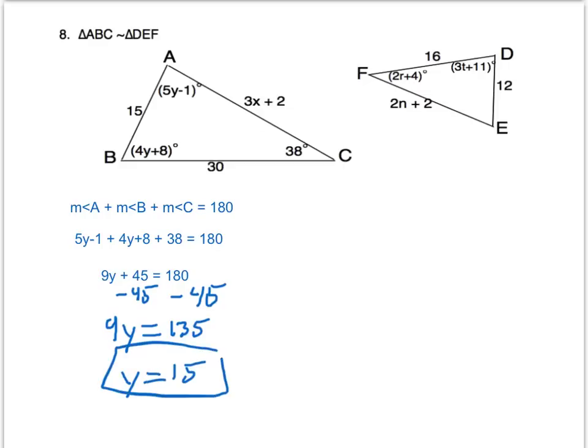And so that piece of information is kind of a linchpin, sort of a key to finding out a lot of other angles. I know the measure of angle A is 74. Because y is 15, you can substitute that value in for 5y minus 1. We can do the same thing for angle B. We know B is equal to 68 degrees. Because if we substitute in 15, we get 68.